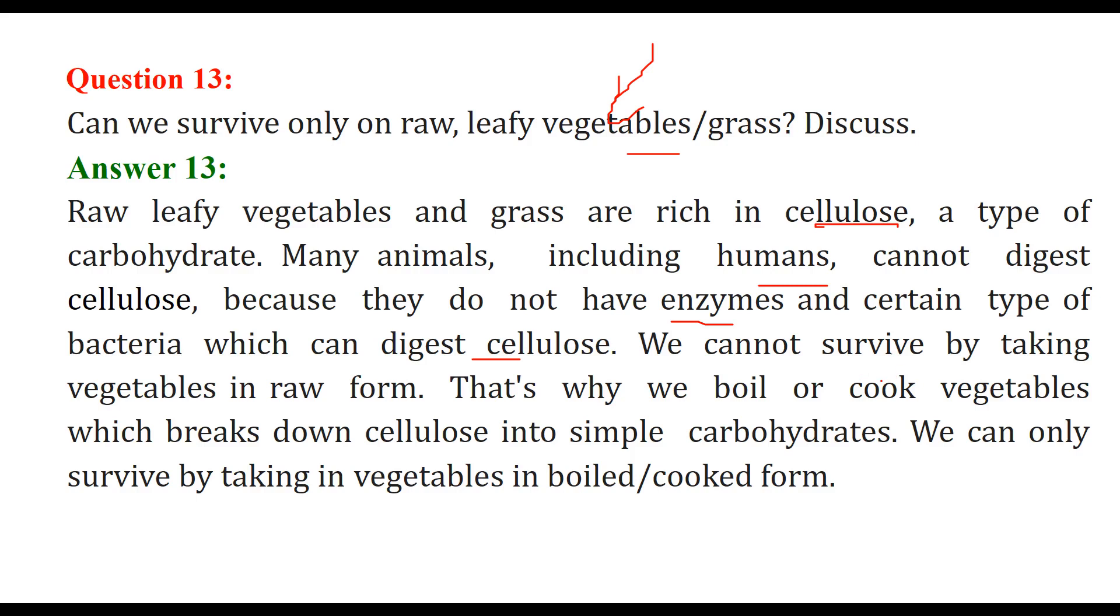We can't just survive on vegetables in raw form. That is why we boil and cook vegetables so that the cellulose is broken down into simple carbohydrates. Cellulose cannot be digested, but if it is boiled or cooked, they are broken into simple carbohydrates. So we can only survive by taking vegetables in boiled or cooked form.